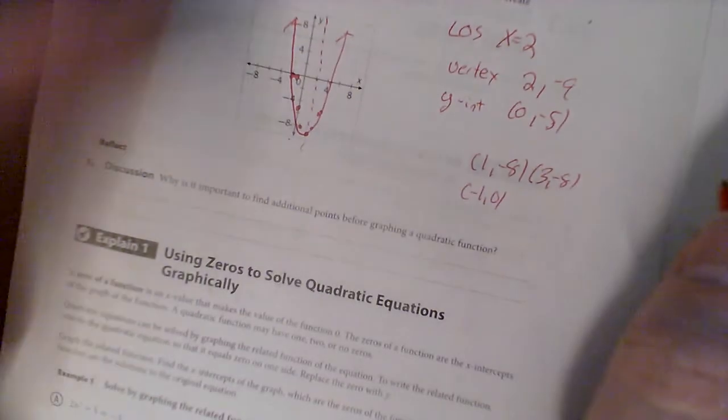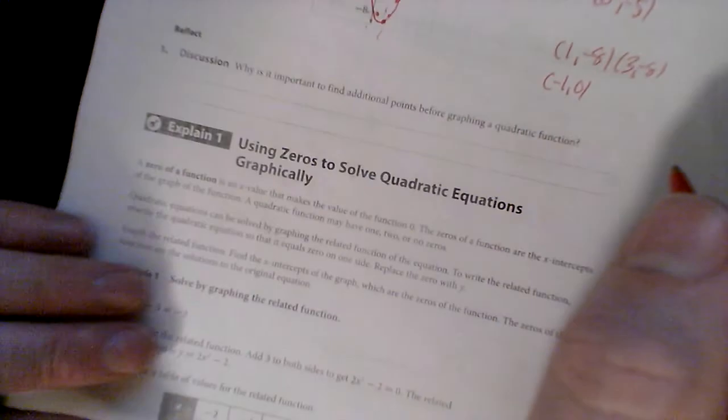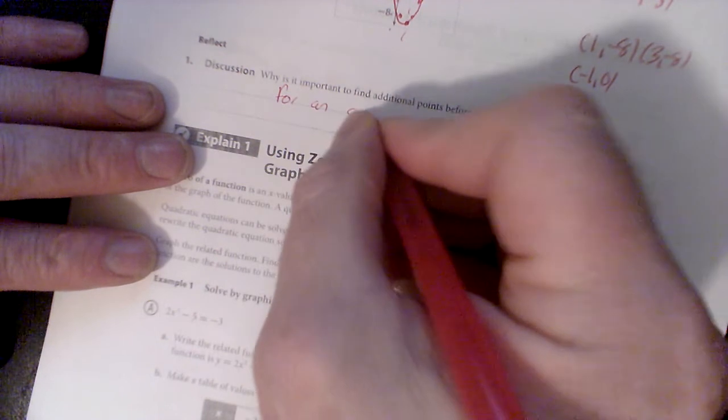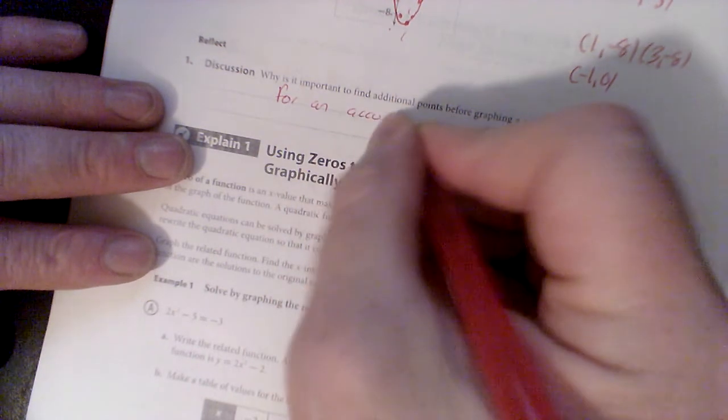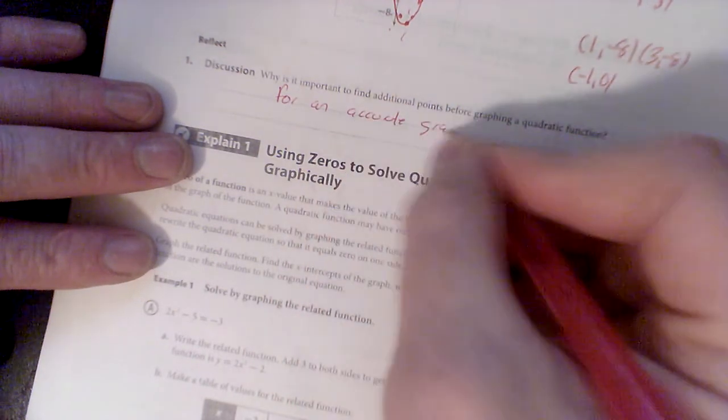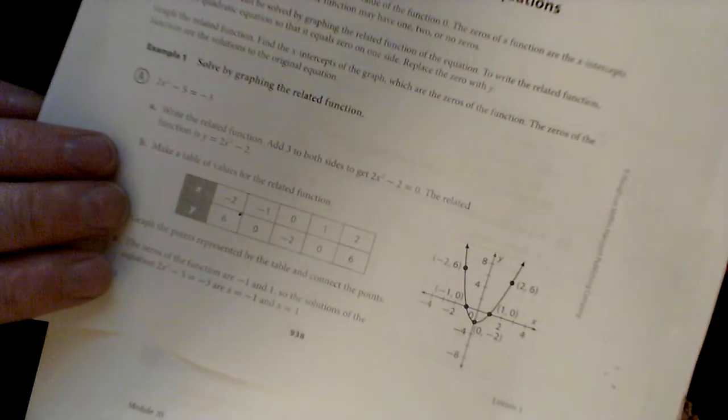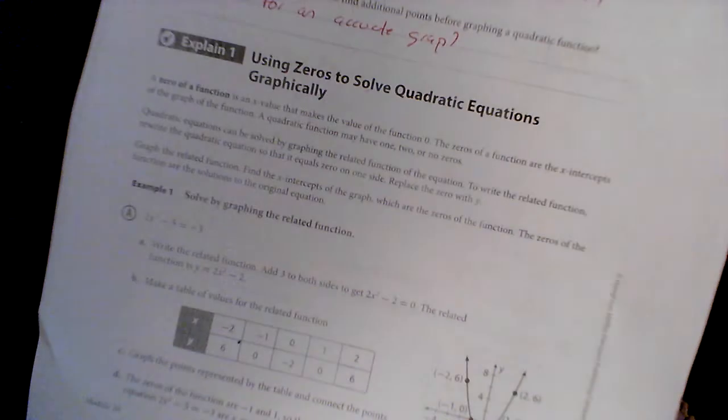Why is it important to find additional points before graphing a quadratic function? Well, for an accurate graph. All right, we're going to call this the first two pages and I'm going to skip to 439 and we'll do a graph over there. Talk to you soon.